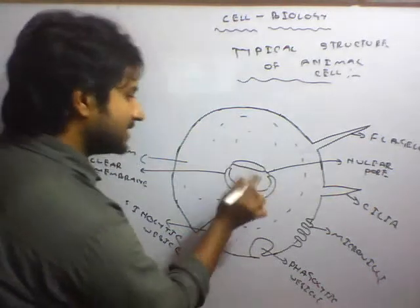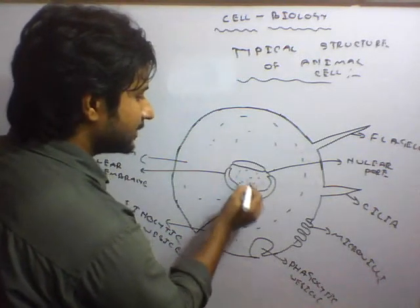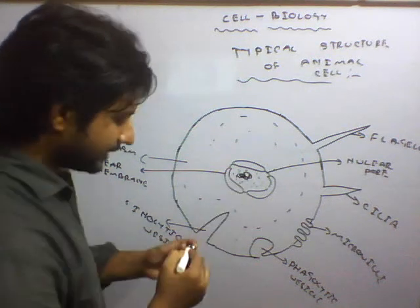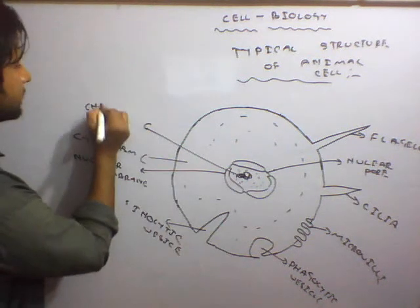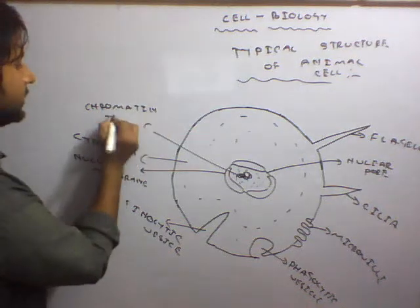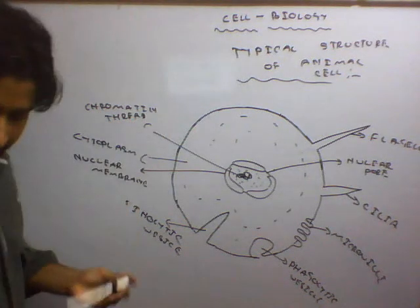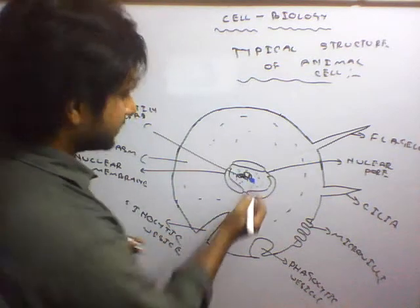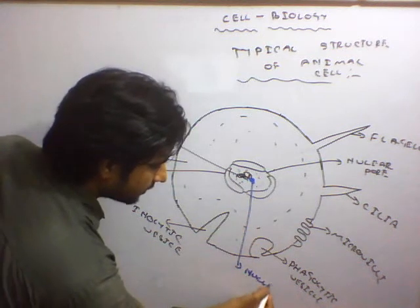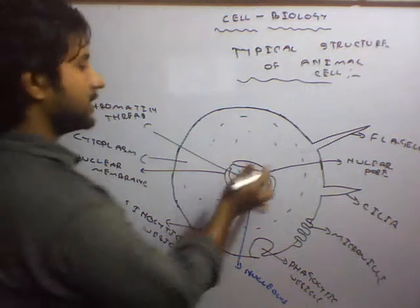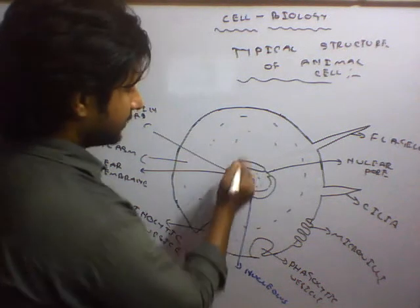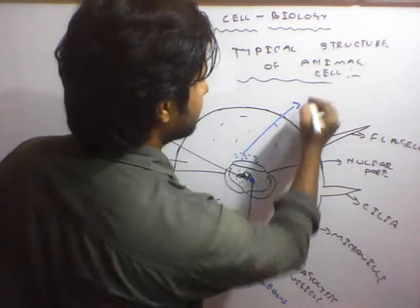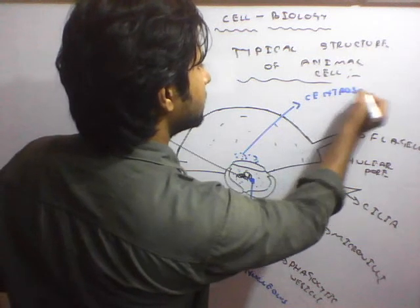Just inside the nucleus, a liquid-like substance is present called the nucleoplasm, which consists of chromatin threads — also called chromatin net. The nucleolus is attached to this chromatin thread and is a non-membranous structure. Just above the nucleus we have the centrosome, which is also a non-membranous structure.